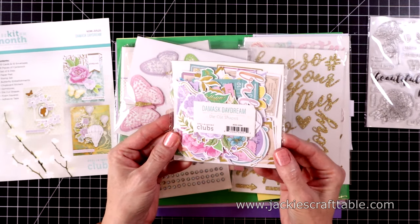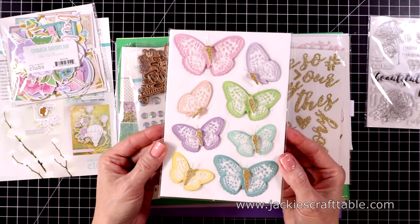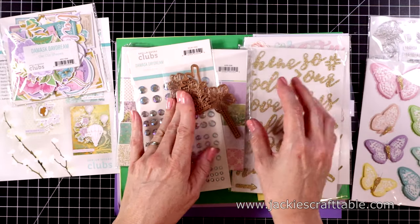Here's the pack of die cut shapes. I'll give you a closer look at these in just a minute. You get some 3D butterflies. These are really pretty because the wings are covered with acetate.